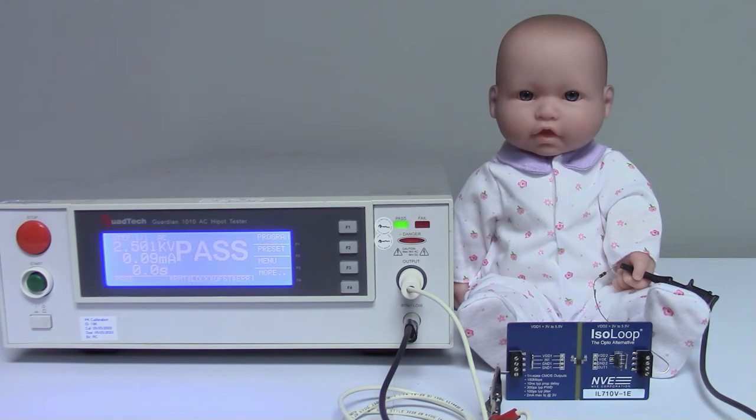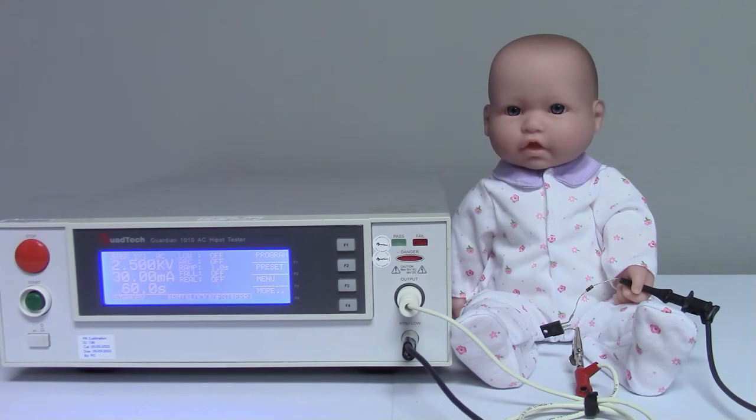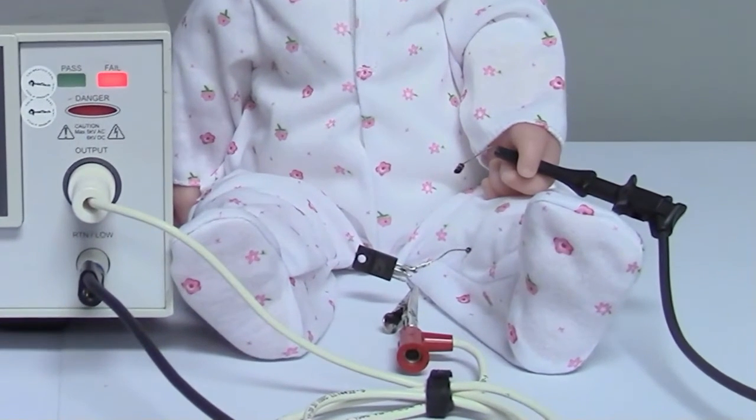But can just any integrated circuit provide isolation? Here's a garden variety IC. This is a voltage regulator we had in the lab. It fails to hold off the voltage, so the resistor smokes and breaks.